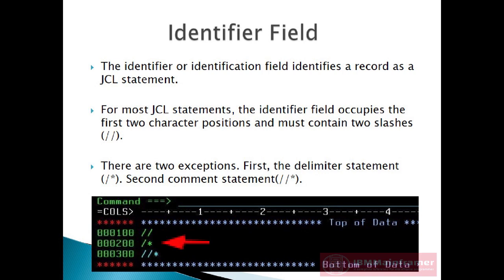First, the delimiter statement has a forward slash in column 1 and an asterisk in column 2. The delimiter statement is used to indicate the end of data or transmittal records in the input stream.